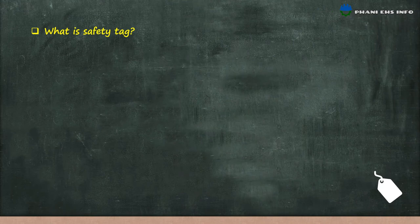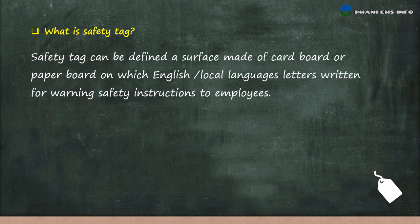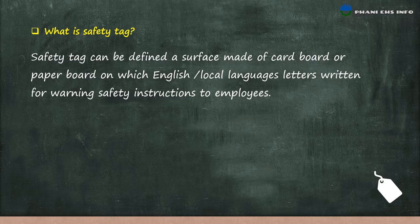What is a safety tag? A safety tag can be defined as a surface made of cardboard or paperboard on which English or local language letters are written for warning safety instructions to employees.